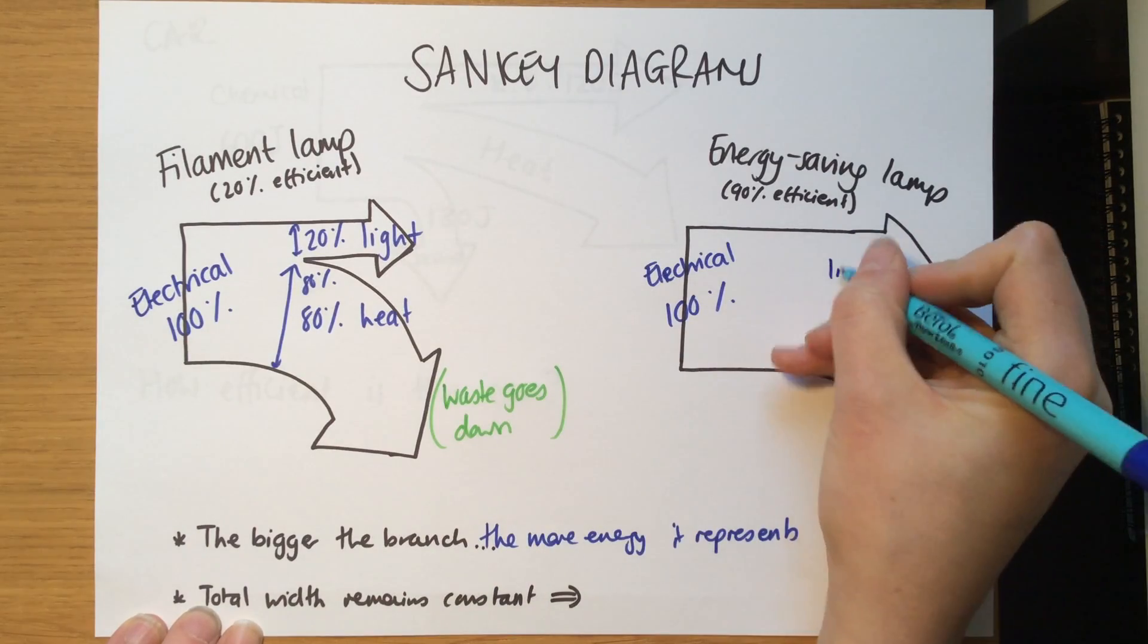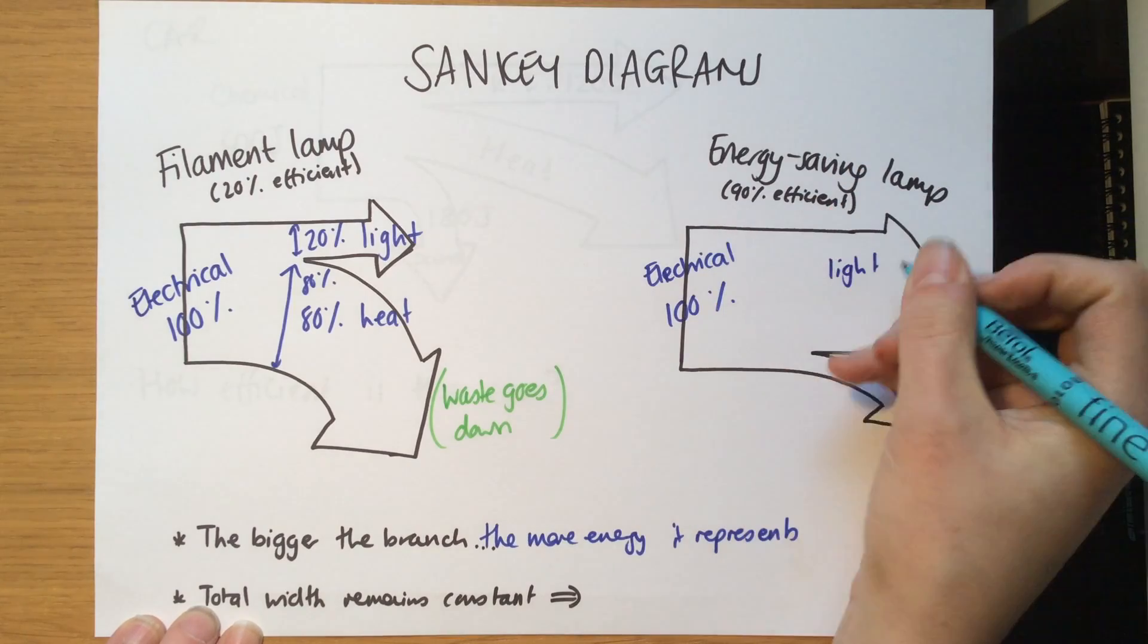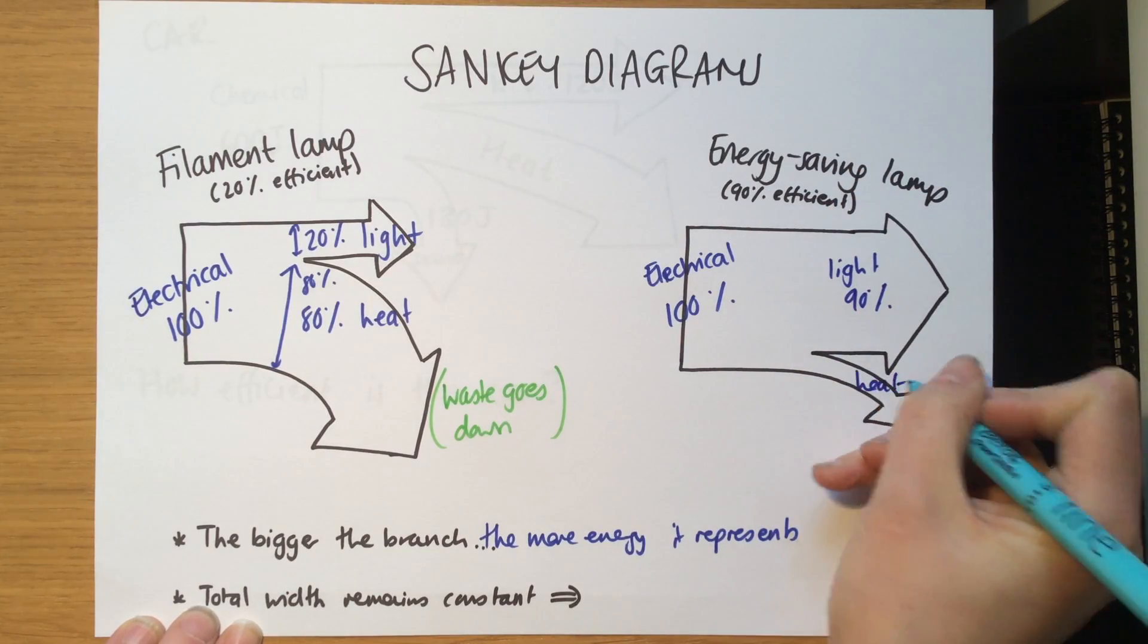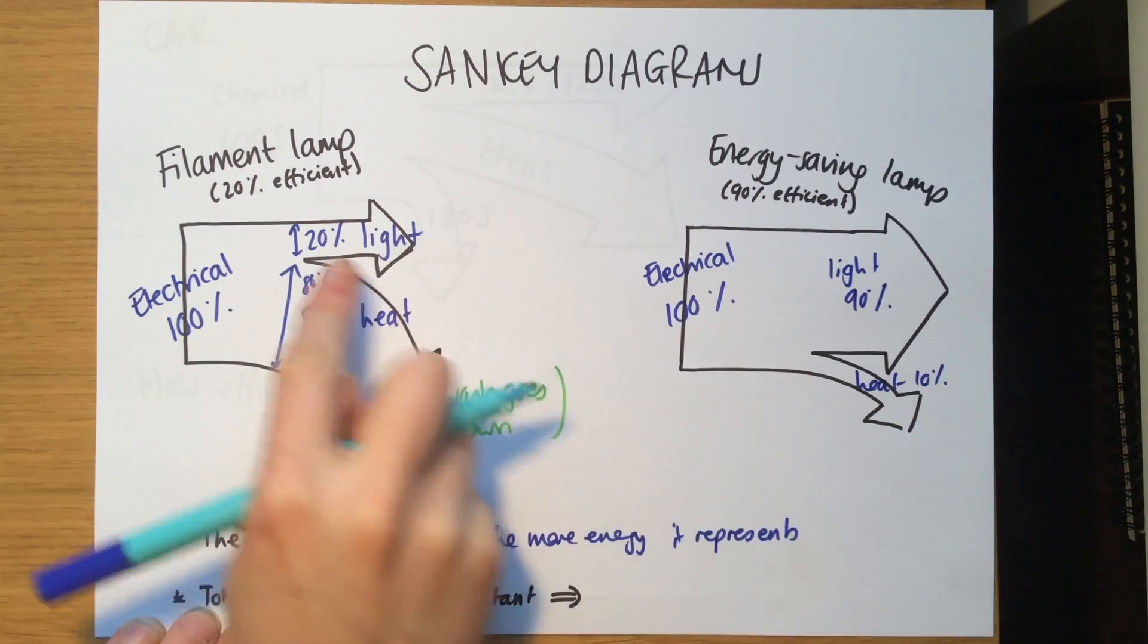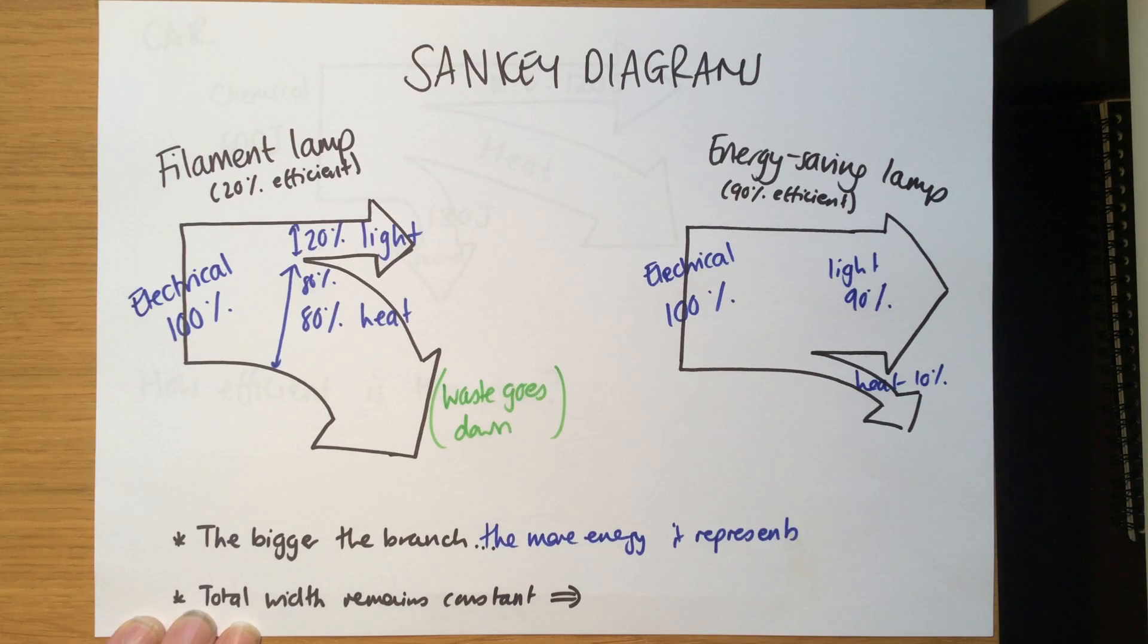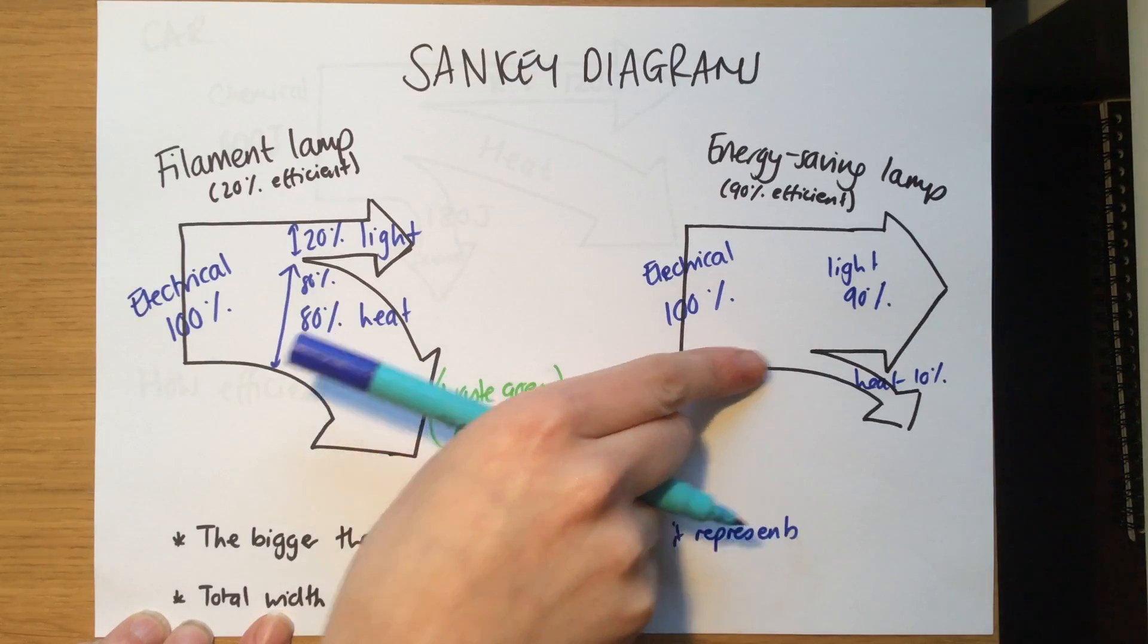Here we'd have to write down that the light energy, we know it's 90 percent efficient, so light is going to be 90 percent and heat is only 10 percent. That's why this arrow here is smaller than that arrow, because this arrow should only be about a tenth of this width.